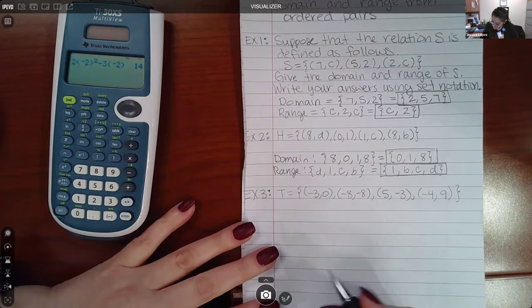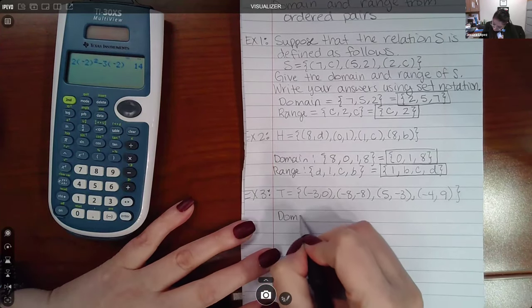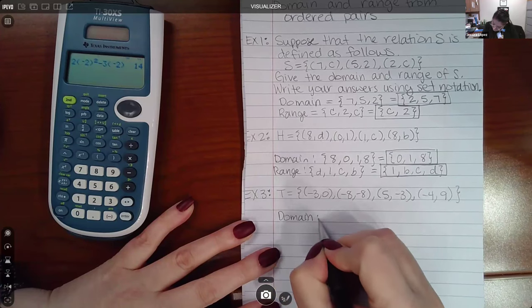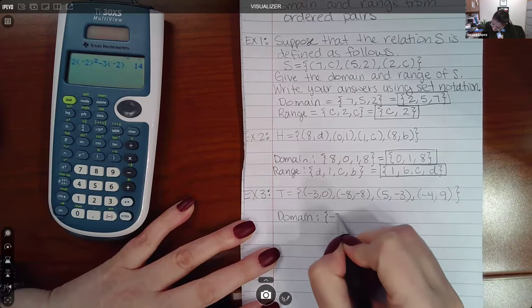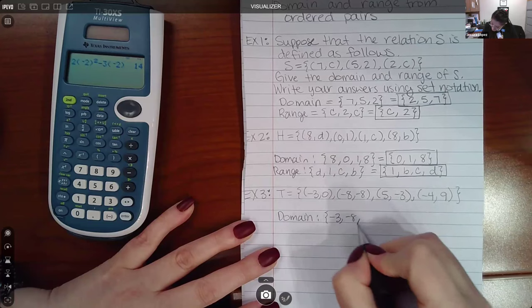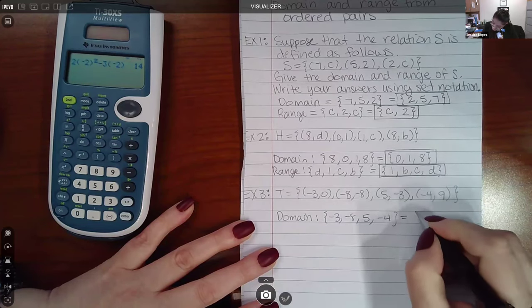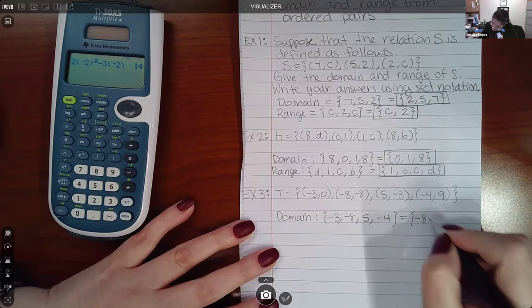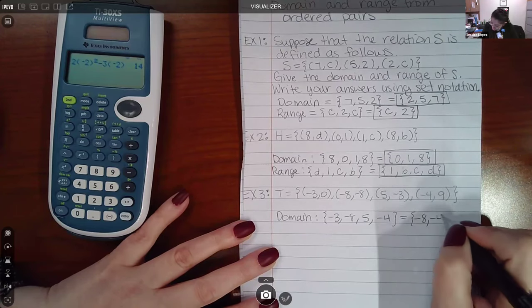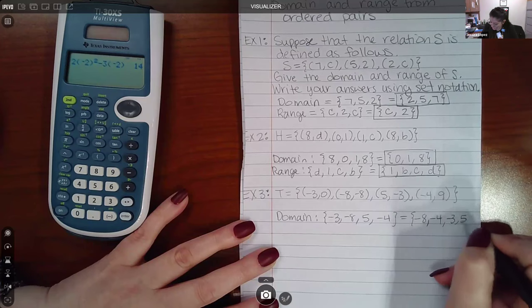Now for example three, my domain would be negative three, negative eight, five, negative four. And if they want those in order from smallest to largest, it would be negative eight, negative four, negative three, and then five.